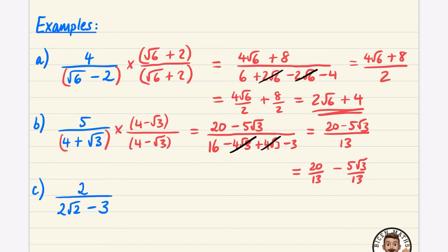We can either leave the answer as 20 minus five root three over 13, or split the numerator as 20 over 13 minus five root three over 13. Both answers are acceptable — it depends on the phrasing of the question, which form they ask for.